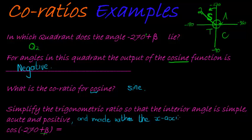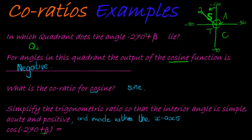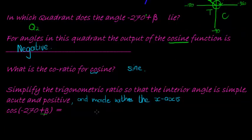And that means that inside here, the -270 is made with the y-axis. So we know we use co-ratios, so this becomes sine of β, with one exception that cos was negative in that second quadrant. It doesn't matter whether the sine is positive or negative, cos is negative, and therefore you have to make it negative. And that's it.